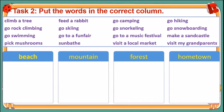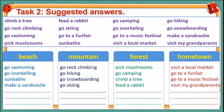Let's check the answers. Beach: go swimming, go snorkeling, sunbathe, make a sand castle. Mountain: go rock climbing, go hiking, go snowboarding, go skiing. Forest: beat musk drums, go camping, climb a tree, feed a rabbit. Hometown: visit a local market, go to a fun fair, go to a music festival, visit my grandparents.